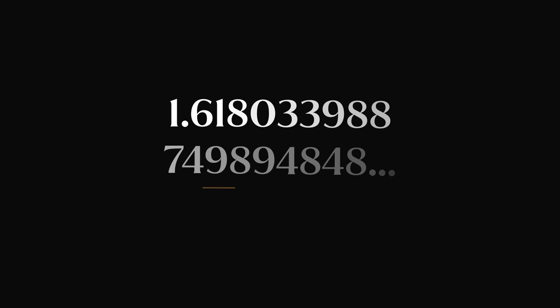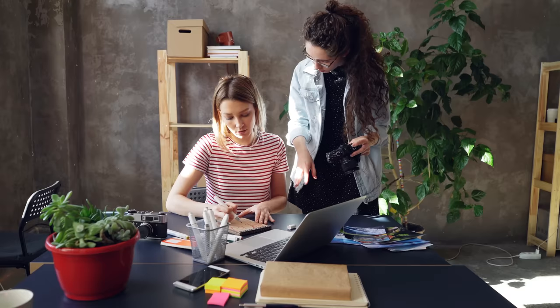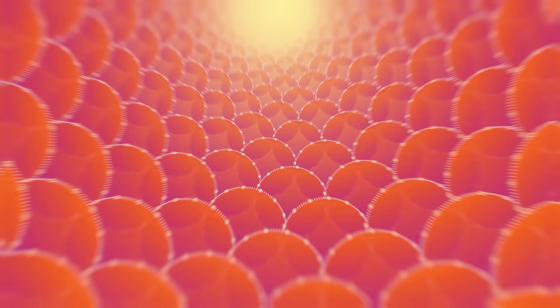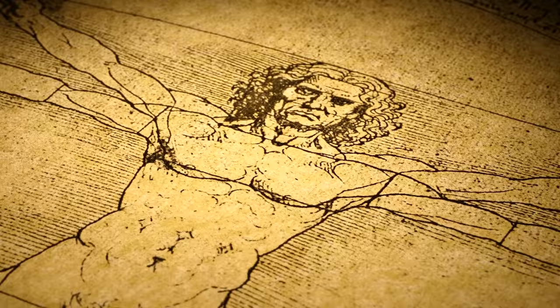The golden ratio is a number approximately 1.618. It has been used by artists, designers, and architects for generations to produce beautiful proportions. Normally, we call it the divine proportions because it was known to be used by Michelangelo and Leonardo da Vinci to create the perfect human proportions when drawing.